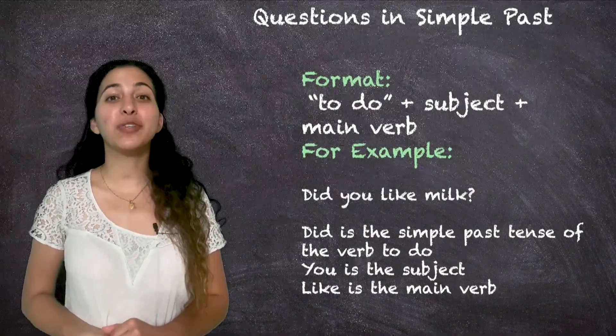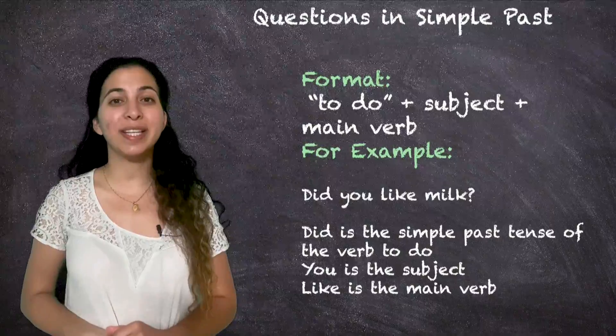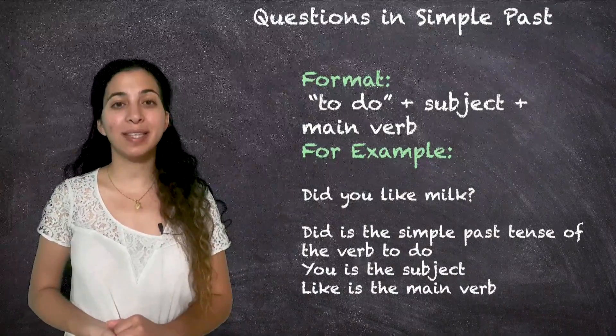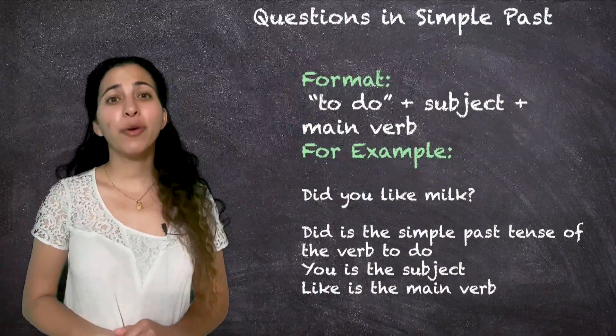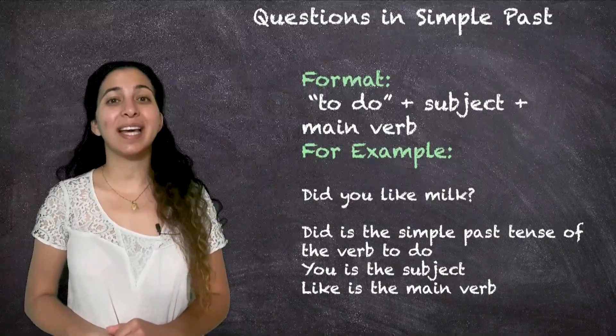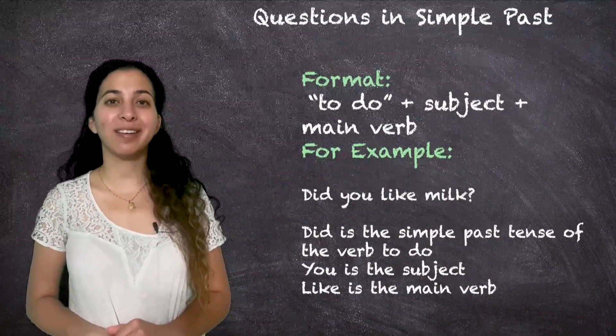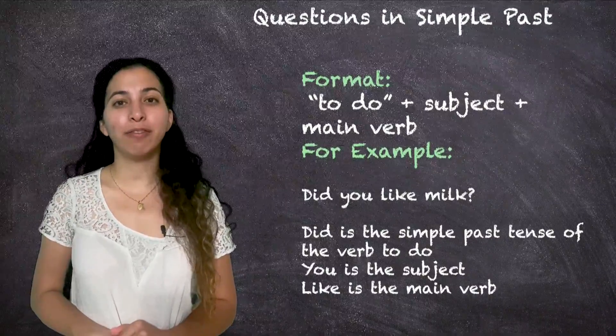Today we have two formats to ask a question. The first is the verb to do plus the subject plus the main verb. For example, did you like the milk? Did is the simple past tense of the verb to do. You is the subject, like is the main verb.